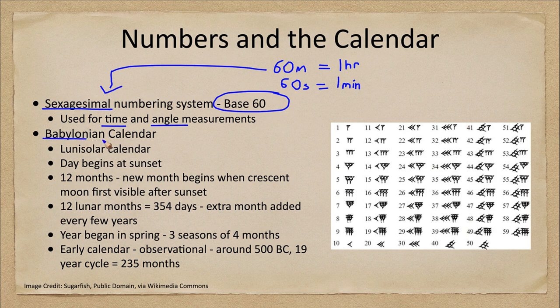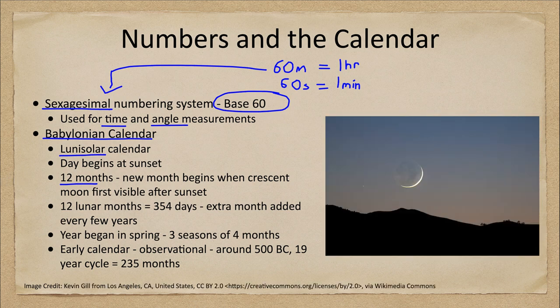The Babylonian calendar is a lunisolar calendar, meaning it uses both the moon and the sun. There are 12 months, and each month begins when the crescent moon is first visible after sunset. So the first time you can see that very thin crescent moon in the sky was the beginning of the new month.